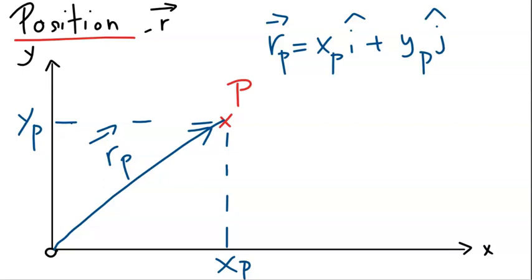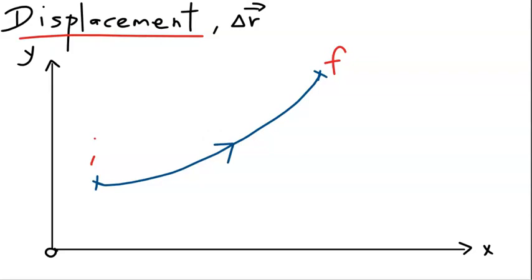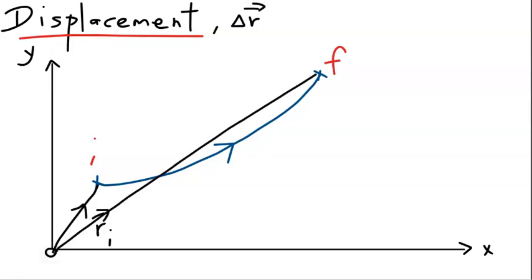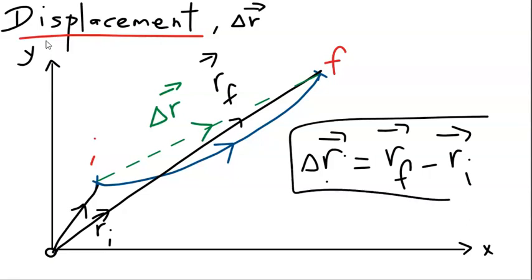This is the position vector for point P. Next, let's look at displacement. Assume an object moves along a curve in two dimensions, starting from an initial point i and going all the way to the final point f. The initial point has a position vector r_i, and the final point has a position vector r_f. The dotted arrow in green is the displacement vector. The expression for displacement is given by the final position vector minus the initial position vector, as defined in the case of one-dimensional motion.